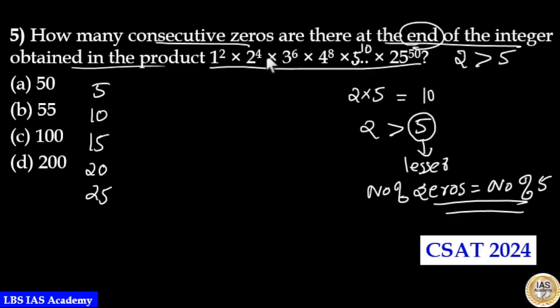Now after 4 raised to 8 we have 5 raised to 10. That is 5 into 2 equals 10. You can see this is 2, 4, 6, 8 up to 50, and when you have 5, the power is 10. 5 into 2 is 10. Same way 10 into 2 is 20. We have 10 raised to 20, 15 raised to 30, 20 into 2 is 40, and 25 into 2 is 50.